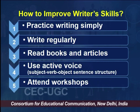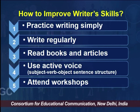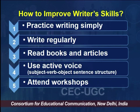Now I would like to talk about how to improve writer's skills — the ways and means to improve upon creative thinking skills and writing skills for the purpose of good, effective writing. The five points are: number one, practice writing simply; number two, write regularly; number three, read books and articles; number four, use active voice; and number five, attend workshops.